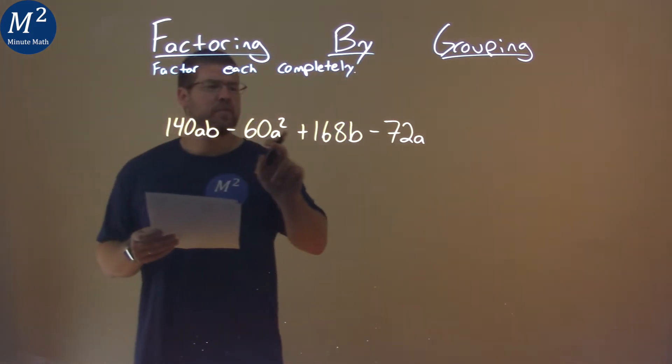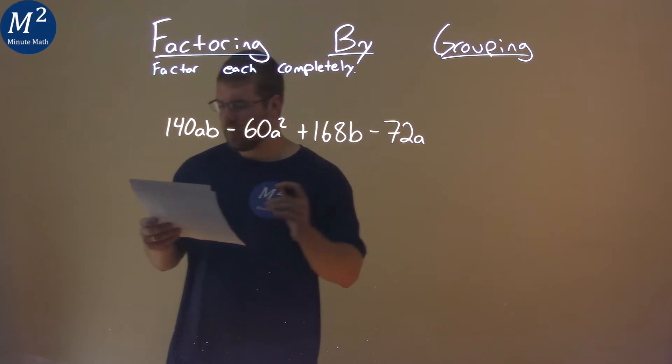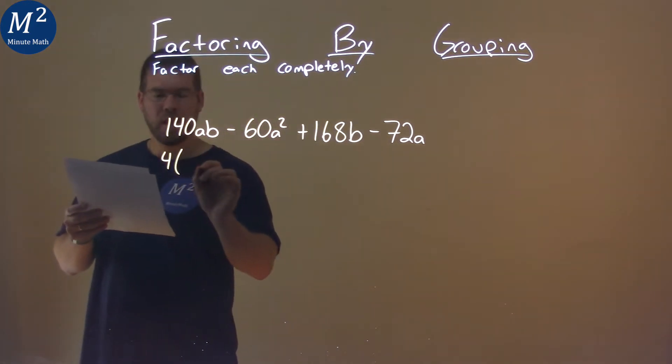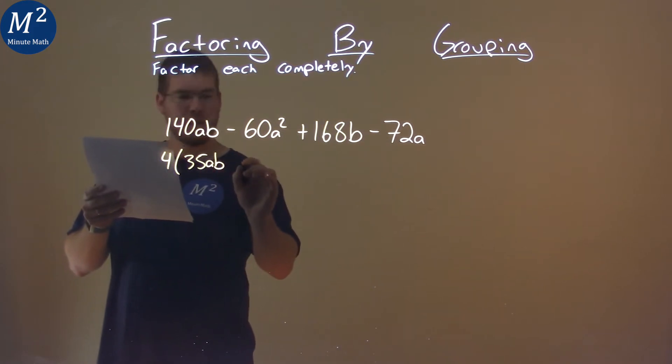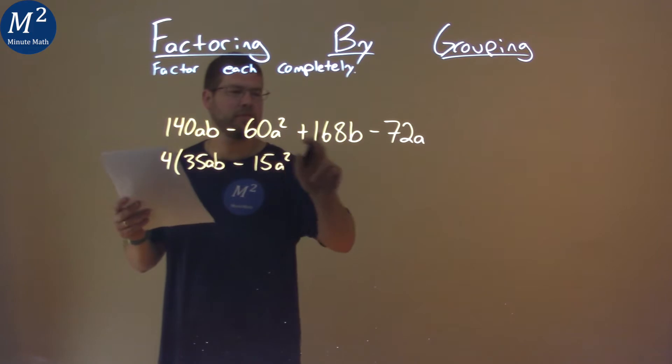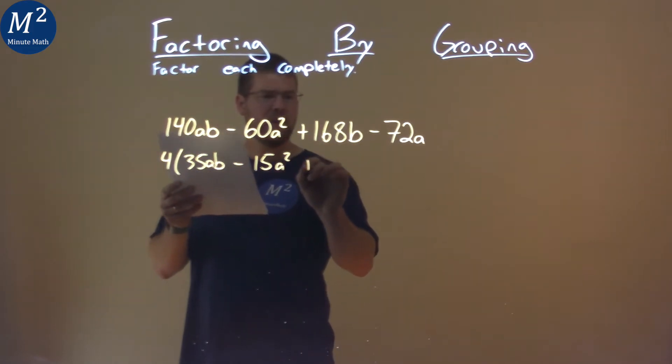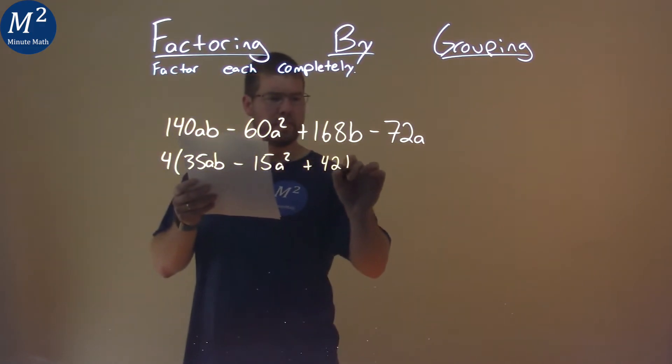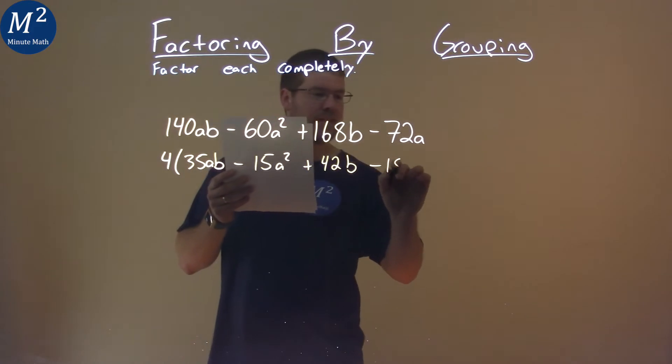Well, 4 goes into all parts here, so if I pull out a 4, I'm left with 35ab minus 15a squared, and remember, we're pulling the 4 out of each part, plus 42b minus 18a.